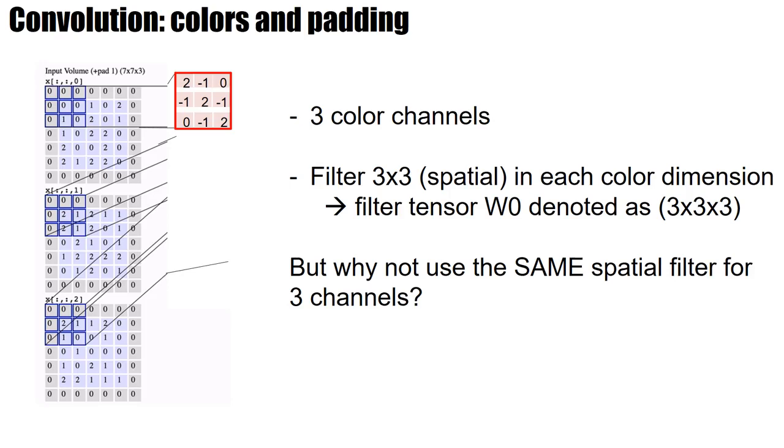But actually, why should the spatial filter be different in each channel? If you think about this, so this indicates here that I have sort of a diagonal stripe detector, an edge detector for diagonal patterns.